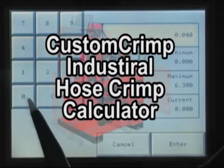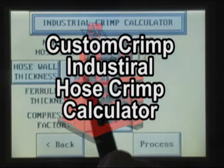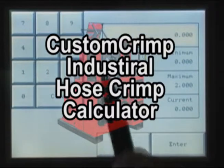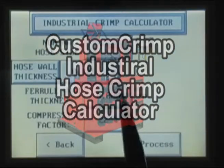All that is required of the operator is a few simple measurements, and the Industrial Hose Crimp Calculator will quickly set up the crimper to accurately crimp most combinations of industrial hoses and fittings.